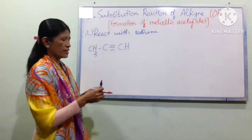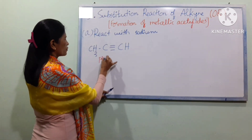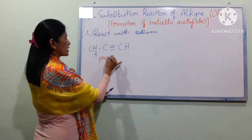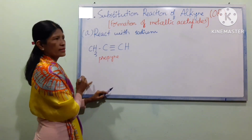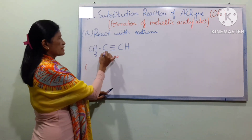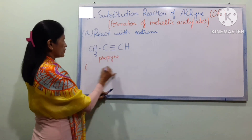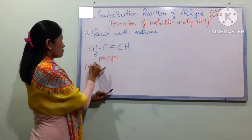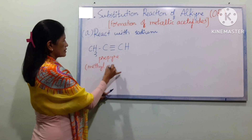CH3C≡CH. Now let's take a look. The answer involves C≡C. There is a problem with C≡C and D1C.